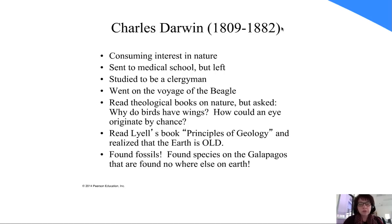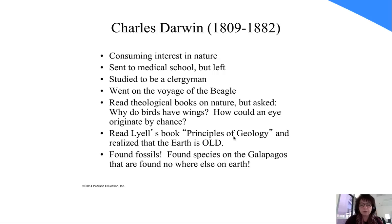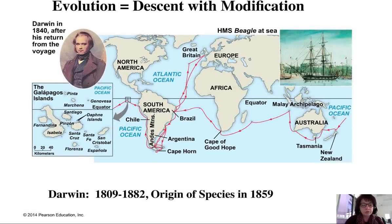Darwin thought he'd study medicine, but it was too gory for him. He came from a fairly wealthy family, and his father tried to find places for him to flourish — setting him up to become a clergyman so he could pursue naturalist activities. He eventually married and raised a family, and went on the Voyage of the Beagle as their naturalist. Lyell's Principles of Geology informed his understanding that Earth is incredibly old — not 6,000 years as the Bible allegorically suggests, but billions of years old — and that things have changed over time.